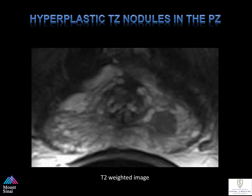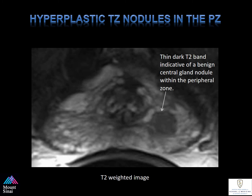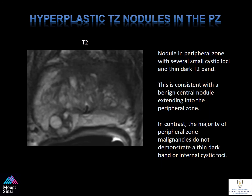This is a zoomed-in view of the T2-weighted images shown on the prior screen. Notice there's a thin, dark T2 band surrounding the peripheral zone lesion. This is indicative of a BPH nodule. Also, there are areas of high signal within the lesion, which is also consistent with BPH nodules within the peripheral zone. This is another example of a hyperplastic transitional zone nodule in the peripheral zone, with several small cystic foci with a thin, dark T2 band, consistent with a BPH nodule extending into the peripheral zone.